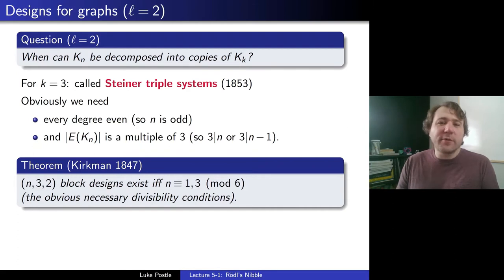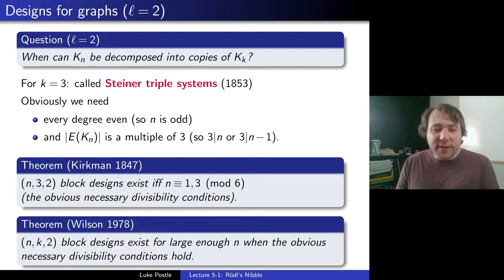And then that was about the state of the problem. People worked on various numbers and smaller things, but the very big breakthrough was from Wilson in the 70s, who showed that (n,k,2) block designs exist for large enough n when the obvious necessary conditions hold. But here for large enough n, saying there could be a finite number of exceptions. So that was for graphs.